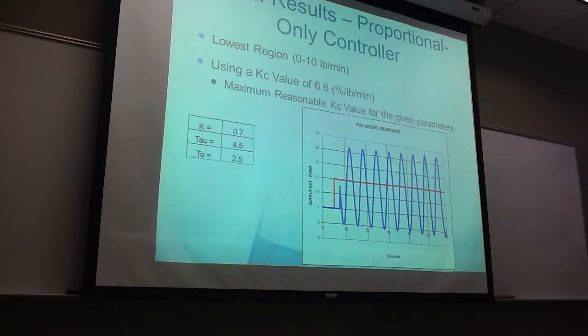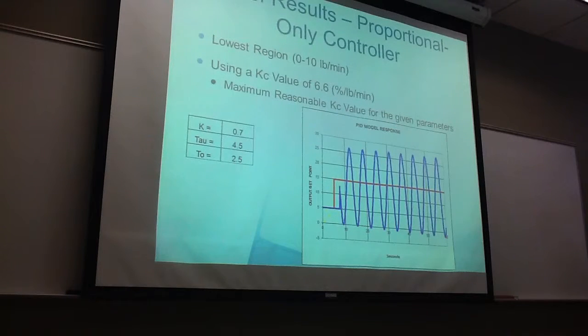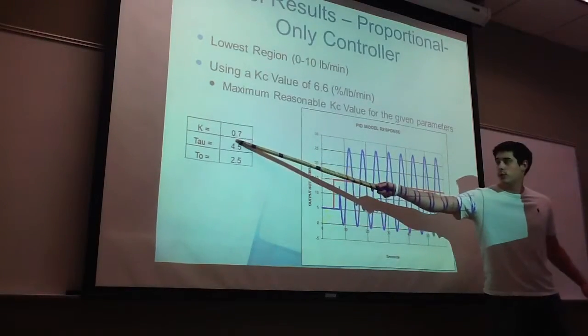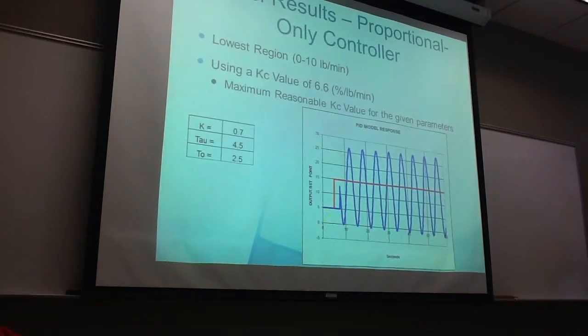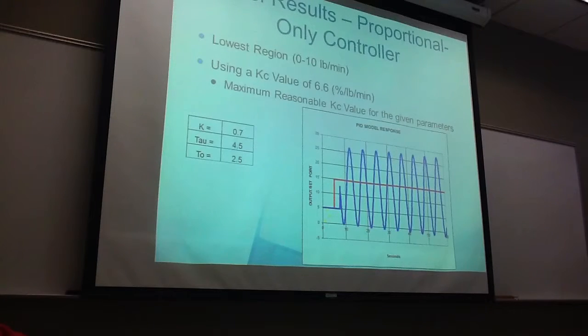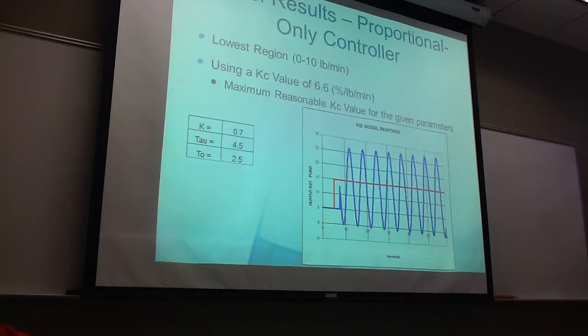And on to our most current experiment, proportional only control. And this graph right here was using our lowest region from 0 to 10 pounds per minute. And we used a maximum reasonable Kc value for these parameters. The parameters of K equals 0.7, tau equals 4.5, and dead time is 2.5. We used a Kc value of 6.6% per pound per minute.